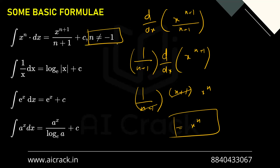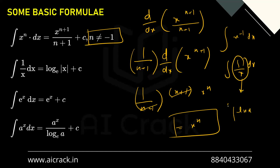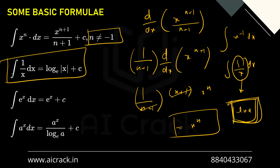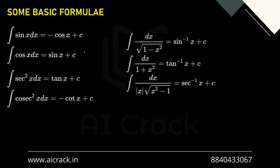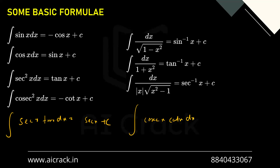Now, n cannot be −1 here, because that would make the formula x^(−1) dx, which is 1/x dx. And 1/x is the derivative of ln x. So for n = −1 this formula is not applicable — for n = −1 the integral is ln x plus c. You also have to remember: integral of sec x·tan x dx = sec x + c, and integral of cosec x·cot x dx = −cosec x + c.